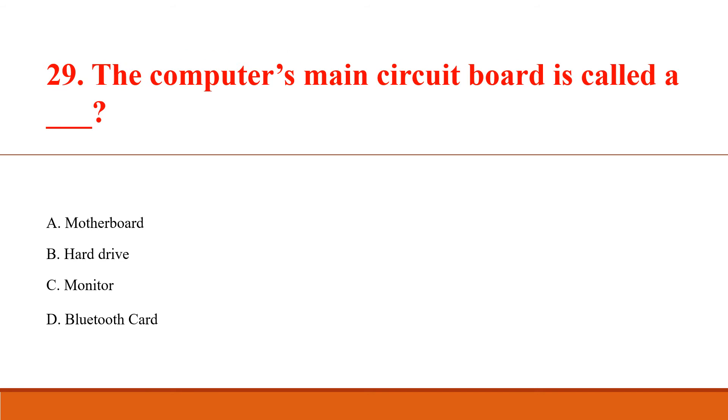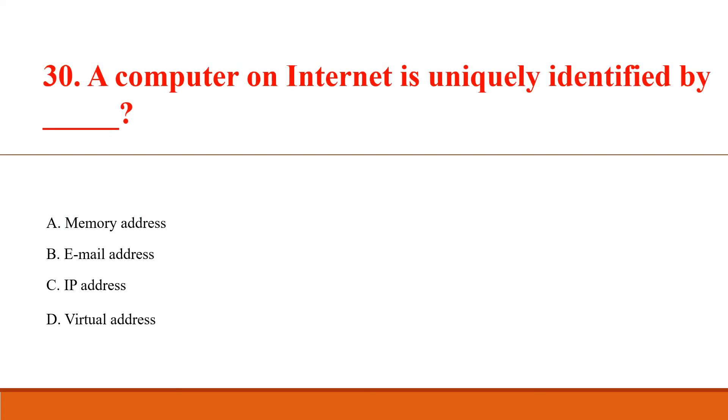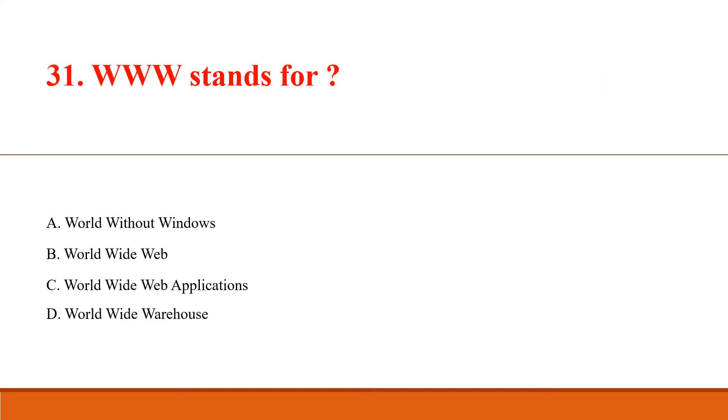The computer's main circuit board is called? Answer Option A: Motherboard. Computers on the internet are uniquely identified by? Answer Option C: IP address. WWW stands for? Answer Option B: World Wide Web.